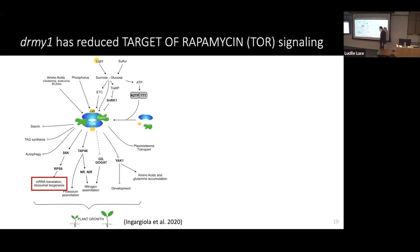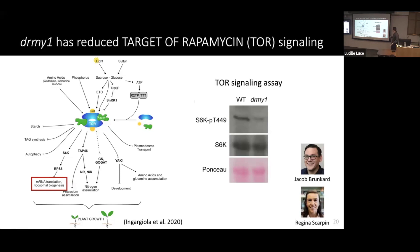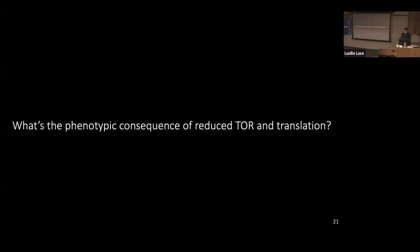A key pathway that controls ribosome biogenesis and protein translation is TOR signaling — Target Of Rapamycin signaling — which integrates many developmental cues to increase the activity of anabolism in the plant, including mRNA translation and ribosome biogenesis. We hypothesized that this pathway is down-regulated in the mutant. Collaborating with Professor Jacob Bernkart and Maria Regina Scarfin, we found that indeed TOR signaling activity is down-regulated in the dreamy1 mutant compared with wild-type. So now we know dreamy1 has defects in TOR signaling and protein translation — but does down-regulating these pathways in wild-type reproduce the dreamy1 phenotype?